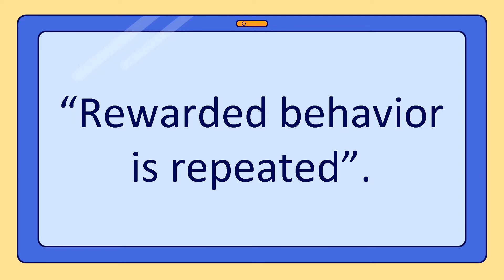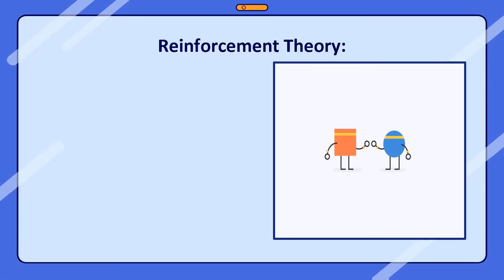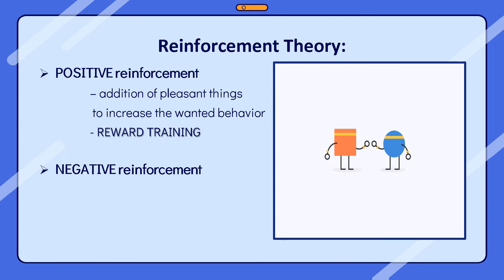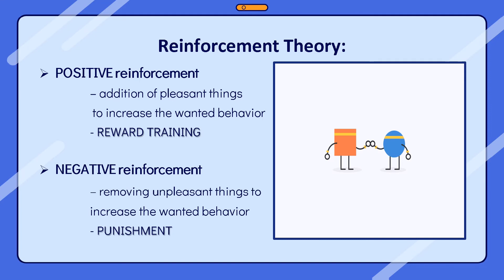Instrumental conditioning involves more activity by the learner than classical conditioning. Reinforcement, the most important aspect of this experiment, is divided into two types: positive and negative. Positive reinforcement is used in reward training — it is the addition of pleasant things to increase wanted behavior, such as extra allowance after cleaning or playing mobile games after homework. Negative reinforcement, like punishment, is used to stop undesired responses or behaviors — it involves removing pleasant things, such as cleaning one's room to stop a parent from nagging.